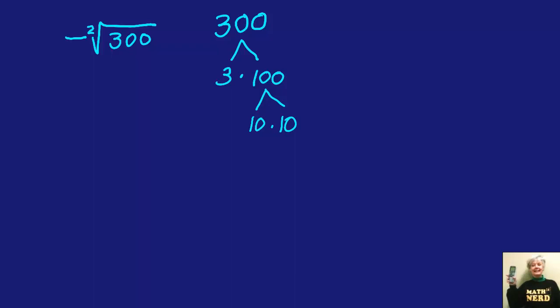Since 10 is bigger than any number it would break down into, 10 is the number I want. So I'll put 10 outside the radical between the negative sign and the radical.